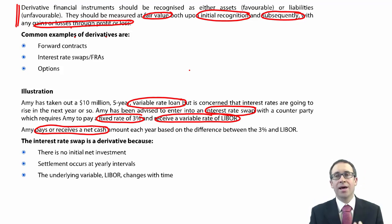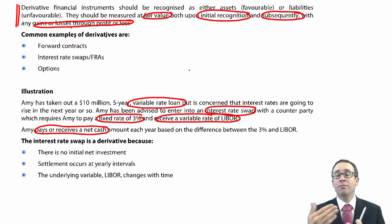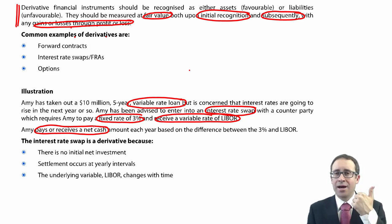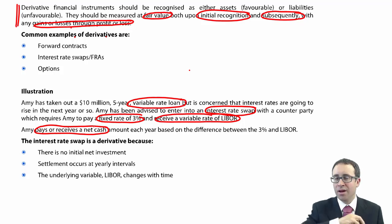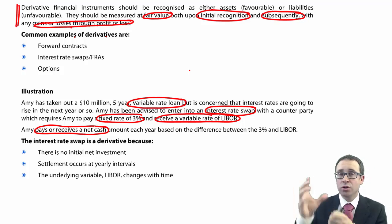To look at the value of the swap, you need to work out its fair value — essentially the amount of savings you're making on the interest, or the extra interest you're paying. You look at that moving every single year and the movement goes through profit or loss. The accounting treatment and the definition is straightforward. However, being able to spot a derivative within a question can be tricky. But once you've spotted that it's a derivative, you can discuss its fair value at each date and talk about the movement in fair value going through profit or loss.